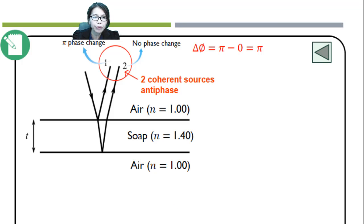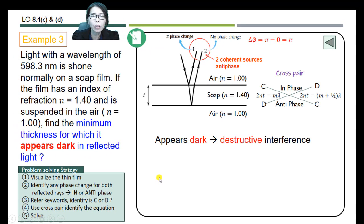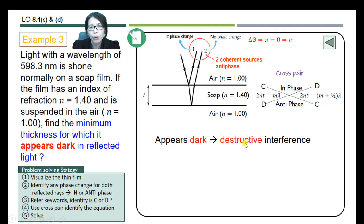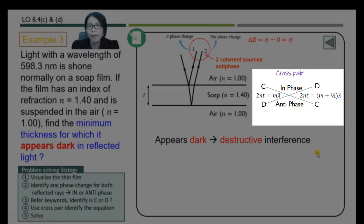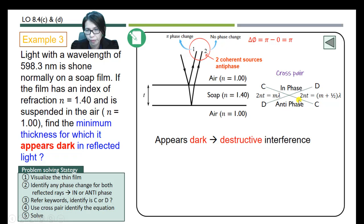Next, we refer to the keywords to identify whether we are dealing with constructive or destructive interference. According to the keywords, 'appear dark' tells us we are dealing with destructive interference. We then use the cross-pair method to identify the equation. We have anti-phase and destructive interference, so this will be our equation.